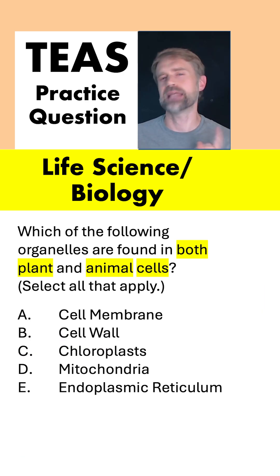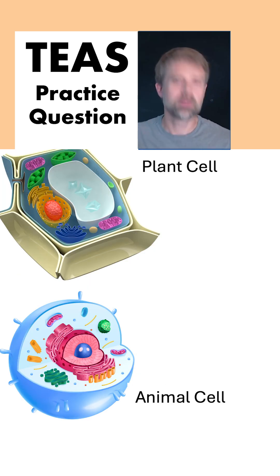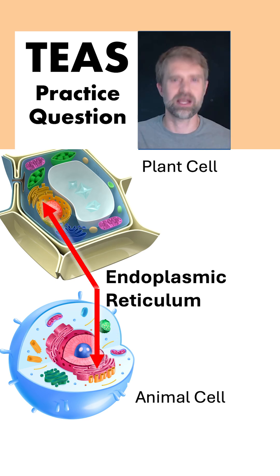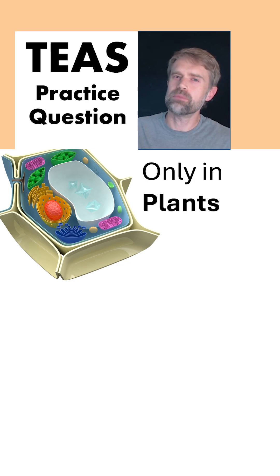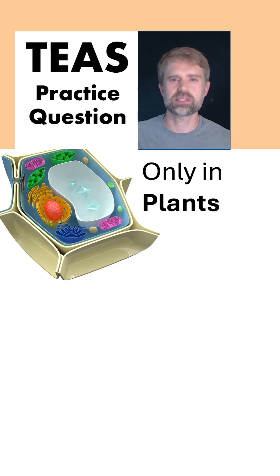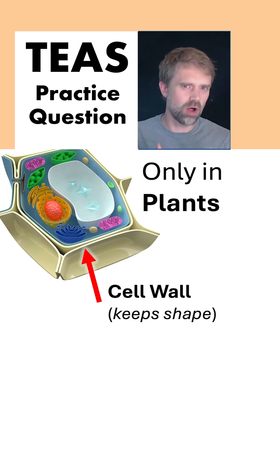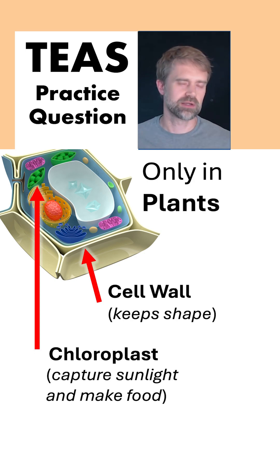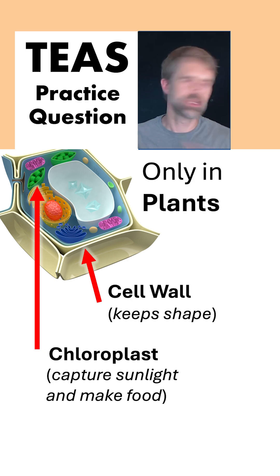So, plant cells and animal cells — which organelles are in both? Let's compare. Basically, plant cells have everything that animal cells have: nucleus, mitochondria, cell membrane, endoplasmic reticulum, stuff like that. But then there are some extra organelles that are only in plants. Plant cells have a thick, rigid cell wall that helps them keep their shape — animal cells don't have that. And plant cells also have chloroplasts that they use to capture sunlight and make their own food. Animal cells don't have those either.